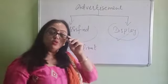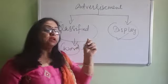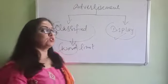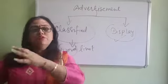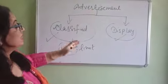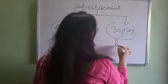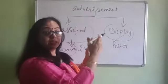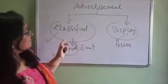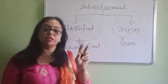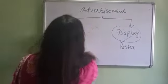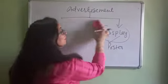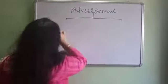In display advertisement, it's just like a poster — a full page of the newspaper. This is basically because they can afford it. You have seen ads for refrigerators, motorbikes, gyms, and various other things. It is just like a poster having a picture along with the display. Classified is limited — you are going to explain in a limited way.